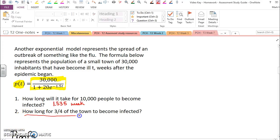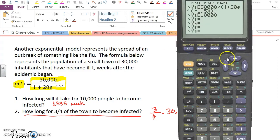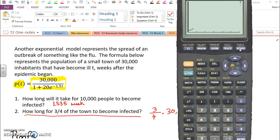Now we're asked how long for three-quarters of the town to be infected. Well, that's going to be three-quarters of or times the 30,000 people total. So I'll go back to my calculator and I'll just type that in. Instead of 10,000, we've got three-quarters of 30,000.